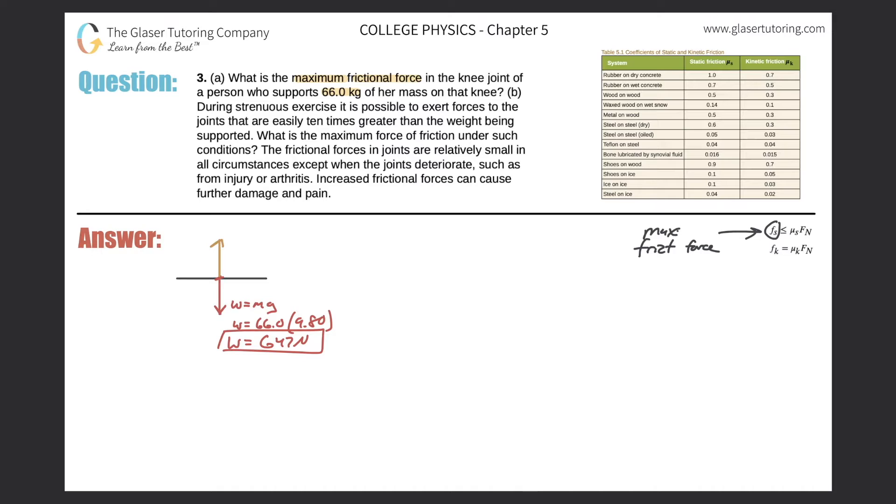This arrow represents the normal force. Since this system is in equilibrium - there's no accelerations - the normal force would equal the weight. So it'd be the same value just pointing in the opposite direction. When you do the math, this value is positive and this value would be negative.